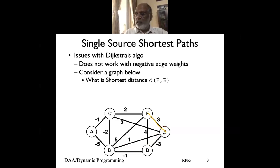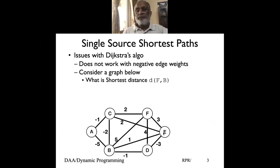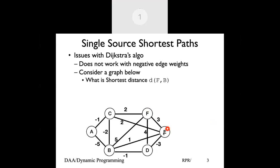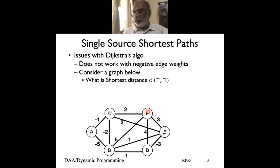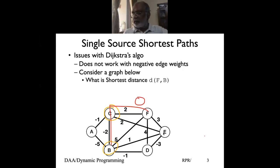F to C — that gives me zero. So assuming Dijkstra's algorithm, what path would it take starting from vertex F when going to B? What is the nearest node to F? E is 3, C is 2, so the nearest node to F is C. Now look at what is the nearest node for F and C — C will give B. If I use Dijkstra's algorithm, my cost would be 0.